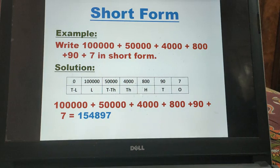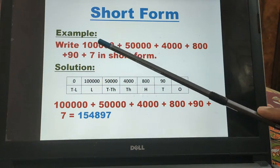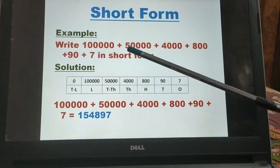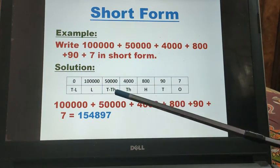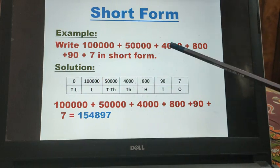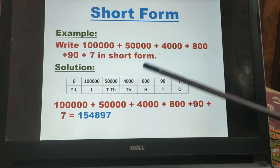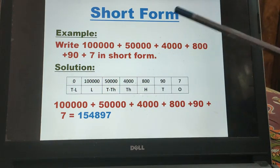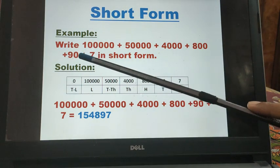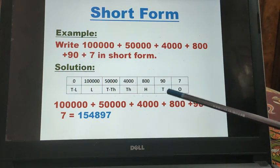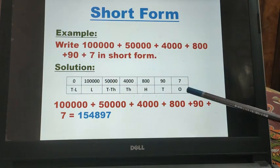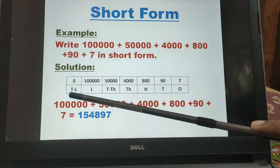So 1 lakh having lakh place, 50,000 means 10,000 place, 4000 means 1000 place, 800 means 100 place, 90 means 10 place and 7 means 1 place.